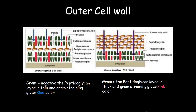The outer cell wall leads us to gram-positive and gram-negative bacteria. This gram staining was done by Danish scientist Hans Christian Gram. He developed gram staining where bacteria take on different colors based on cell wall composition. Gram-negative bacteria have a thin cell wall with a very small peptidoglycan layer, and on staining they give a blue color. Gram-positive bacteria have a thick peptidoglycan layer, and on staining they give a pink color.